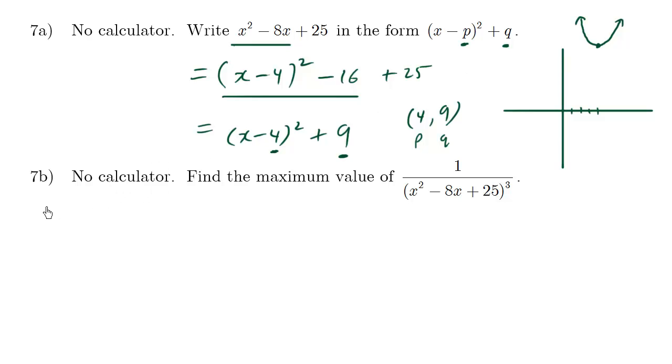Now with no calculator for 7b, find the maximum value. So when we have 1 over this same function cubed, this is cubed, but this here happens to be the function inside these brackets. If we think it through, we know the maximum value must happen at x equals 4. Let's think about why.